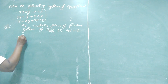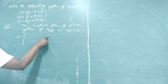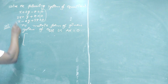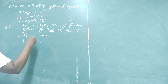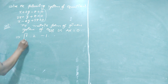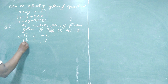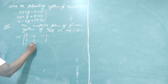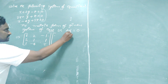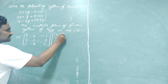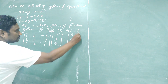What is A here? In capital A, we write the first row as coefficients of the first equation: 1, 2, minus 1. The second row is the coefficients of the second equation: 2, 1, 1. The third row is the coefficients of the third equation: 1, minus 4, 5. Capital X is the column variable matrix x, y, z equal to 0, 0, 0.